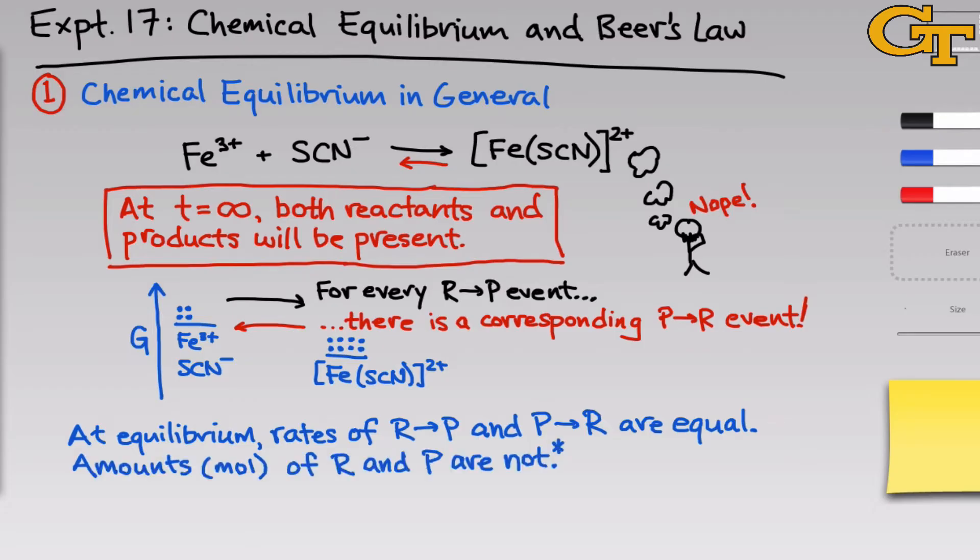Notice however that the amounts, in other words, the numbers of moles of R and P, are not equal. I put a little asterisk here because the one time they do end up being equal is when the reactants and products are identical. But literally, in any other case, when the reactants and products are different in any way, shape, or form, the amounts of reactants and products at equilibrium are not equal. Furthermore, there's no guarantee that we have more products than reactants or vice versa.